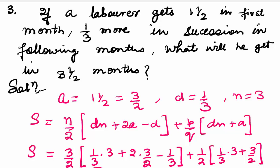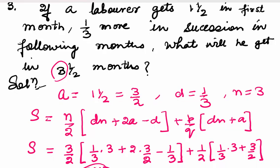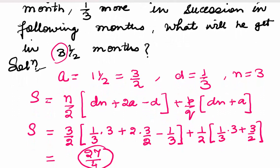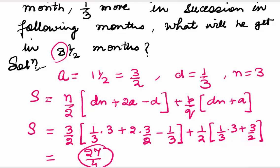In the third question: if a labourer gets 1½ in the first month and 1/3 more in each following month, what will he get in 3½ months? A = 3/2, D = 1/3, and taking integral N = 3 with P/Q = 1/2. Substituting all values in the formula S = N/2 × (DN + 2A − D) + (P/Q) × (DN + A), the sum comes out to be 24/7.